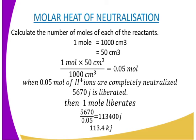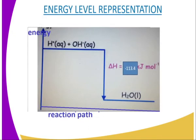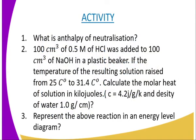How do we represent this in an energy level diagram? We have energy on the y-axis and reaction path on the x-axis. Since it is an exothermic reaction, the product — which is water — has less energy than the reactants, and the energy liberated is shown as the enthalpy change for that reaction, which is -113.4 kilojoules per mole.